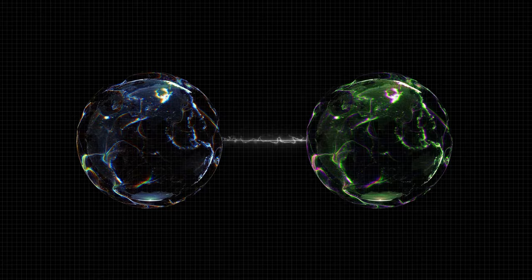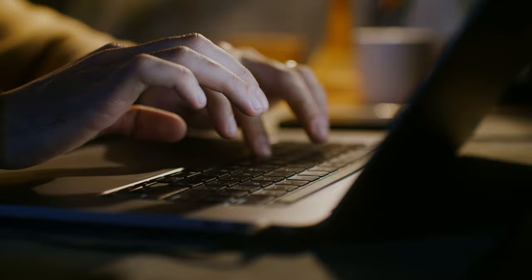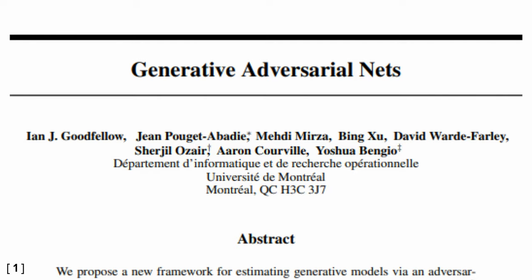What if two neural networks were pitted against one another? That same night, he coded his system, and it worked the first time. In 2014, he and his team published his paper, and since then, the world has never been the same.